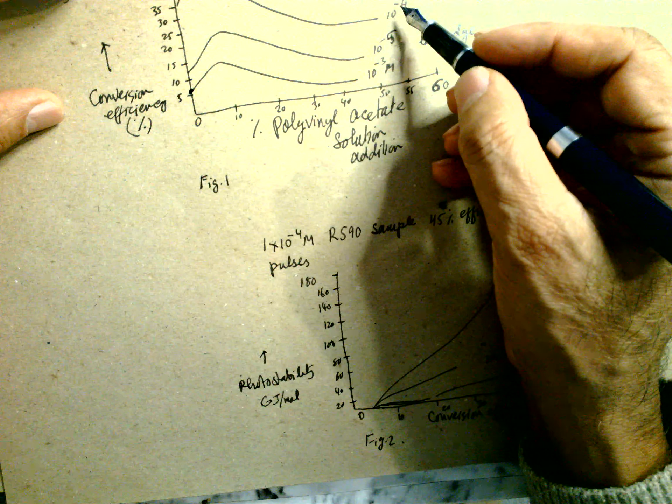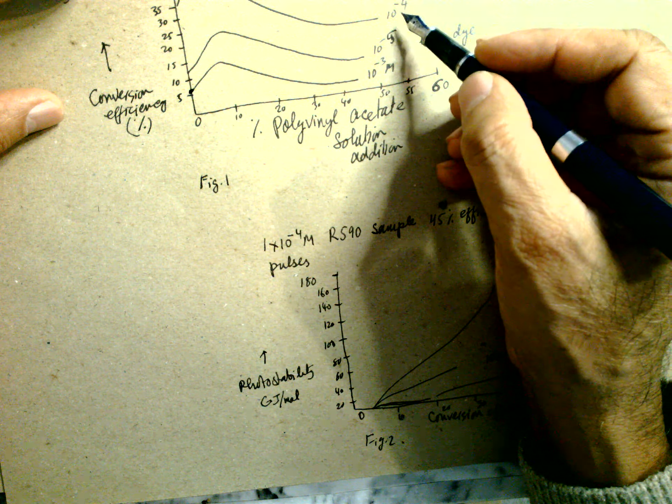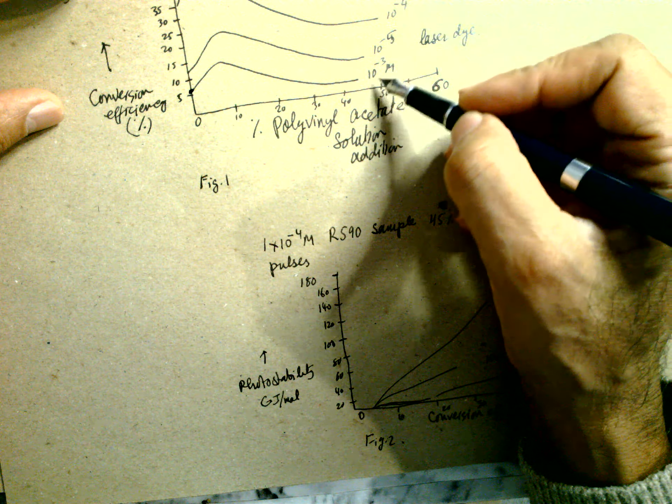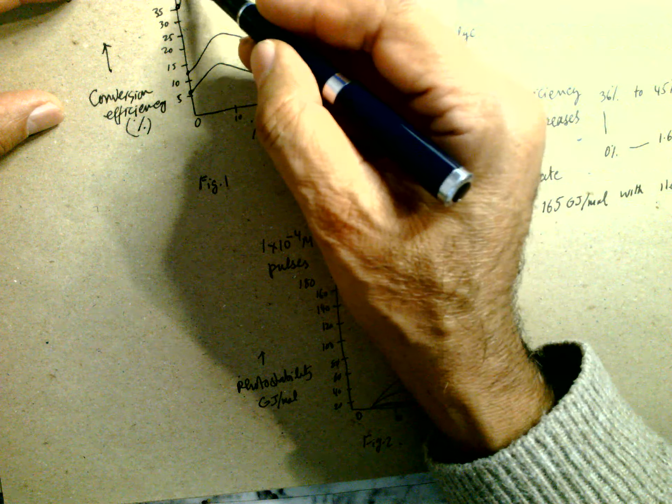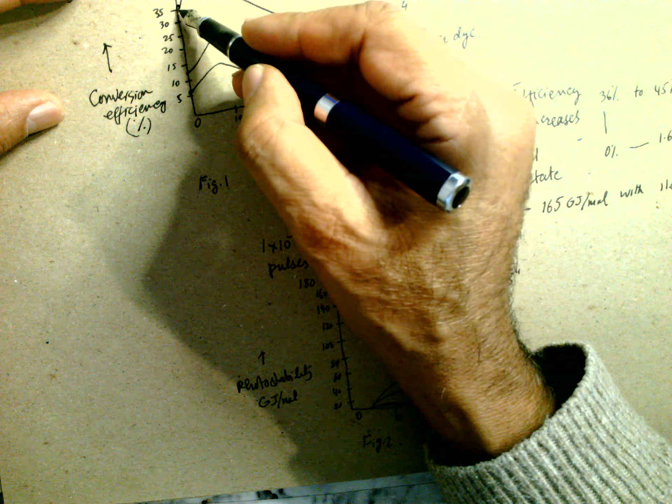Different laser dye concentrations give different efficiencies. The best result was at 10 power minus 4 molar. This is the highest efficiency, and with the addition of polyvinyl acetate, the efficiency increased slightly, from 36 percent to 45 percent.